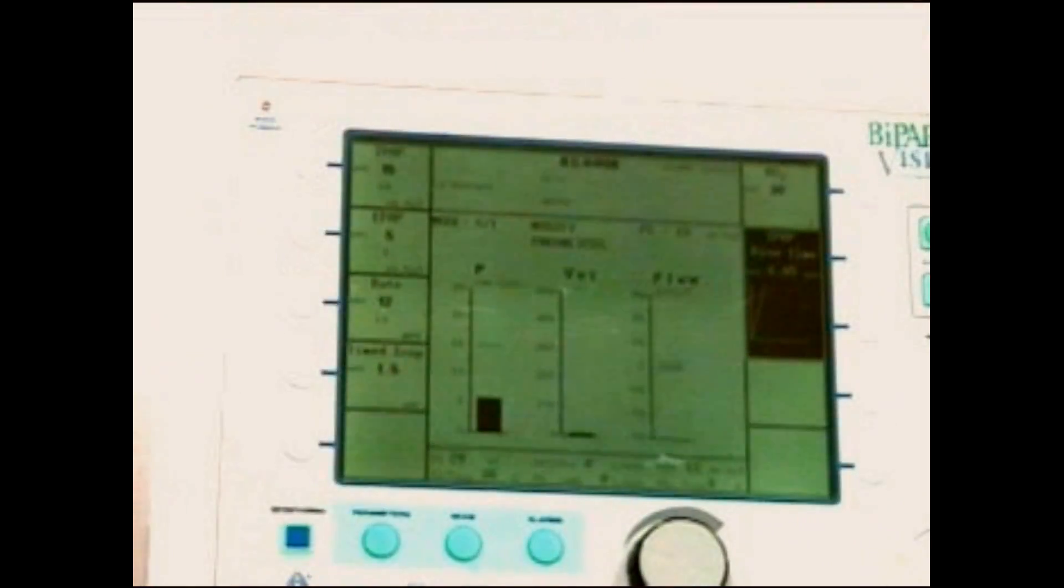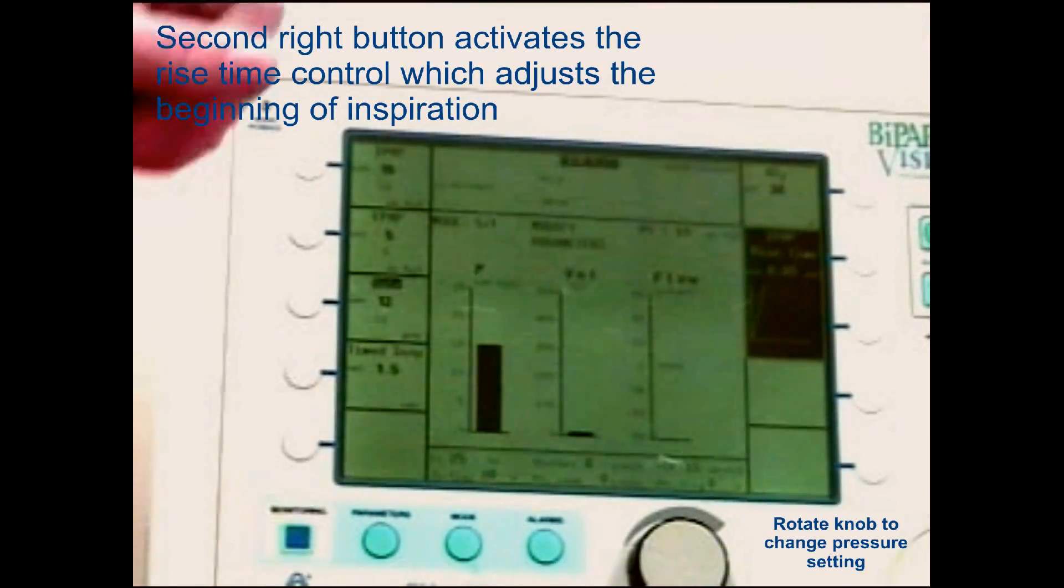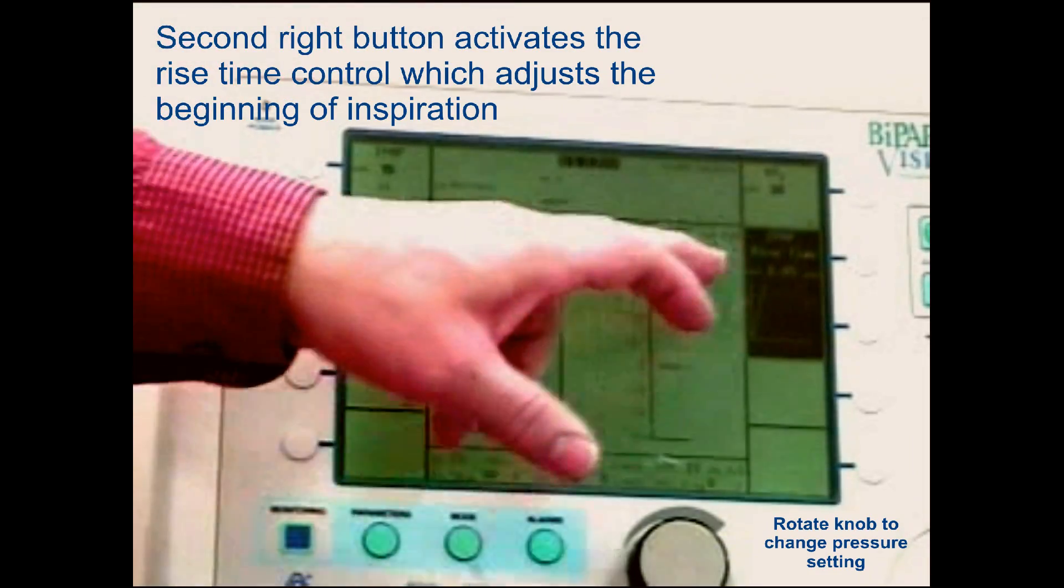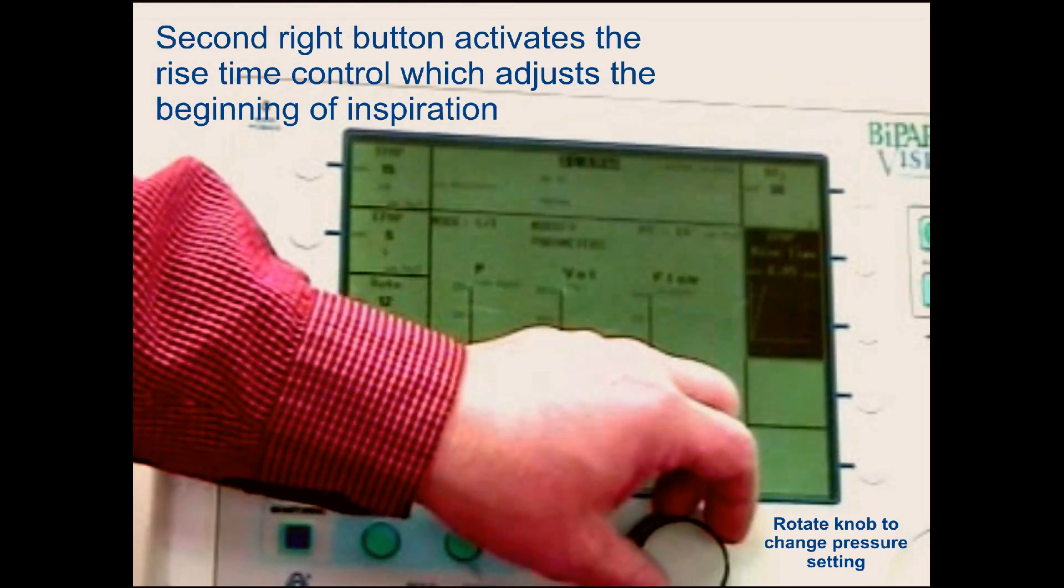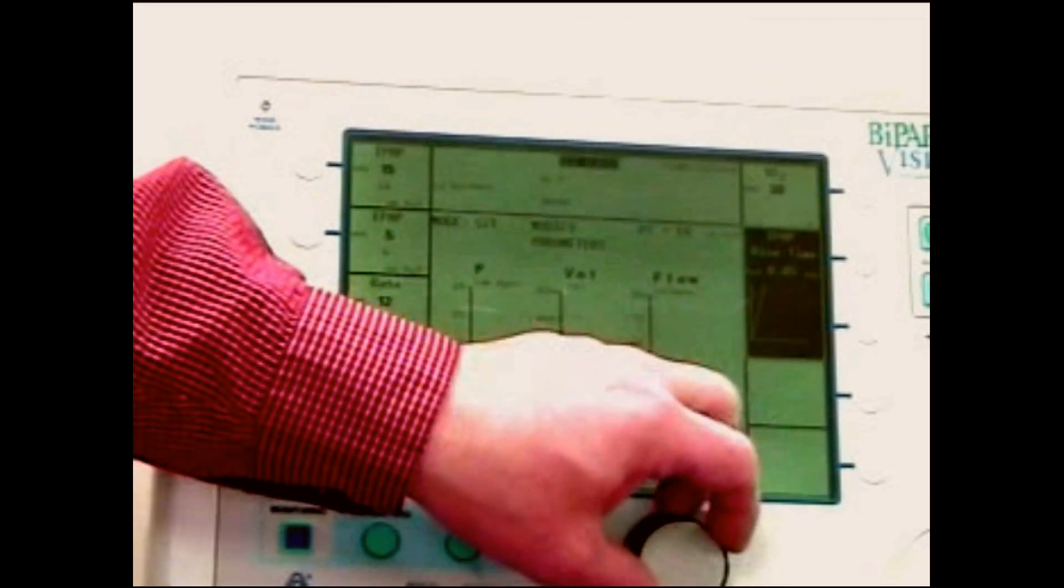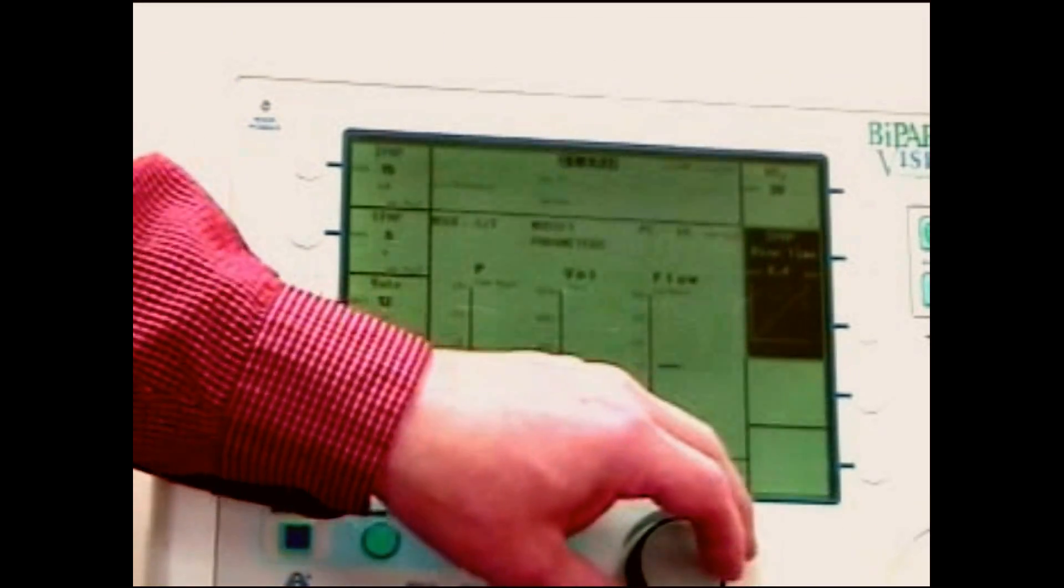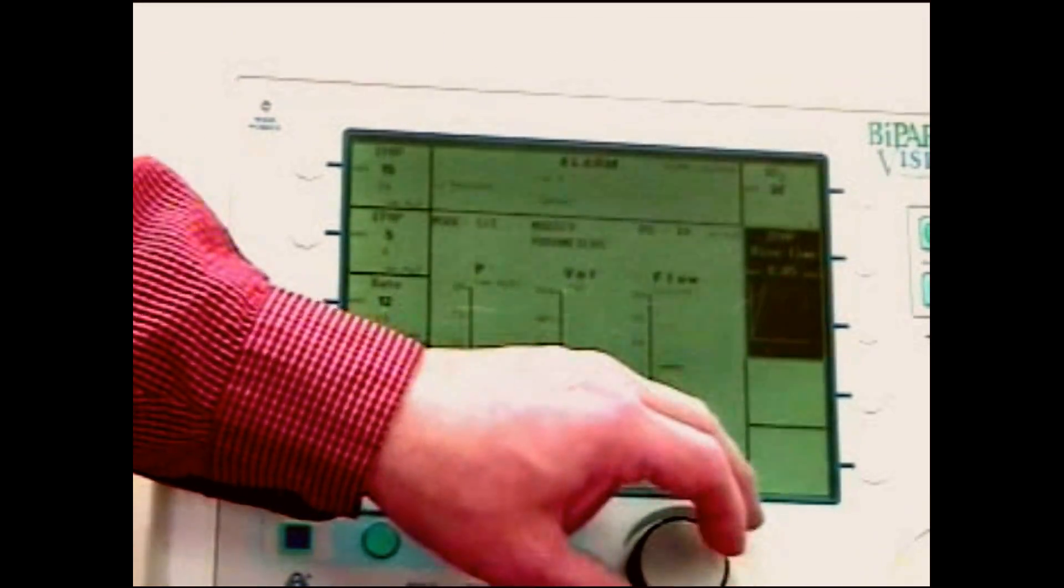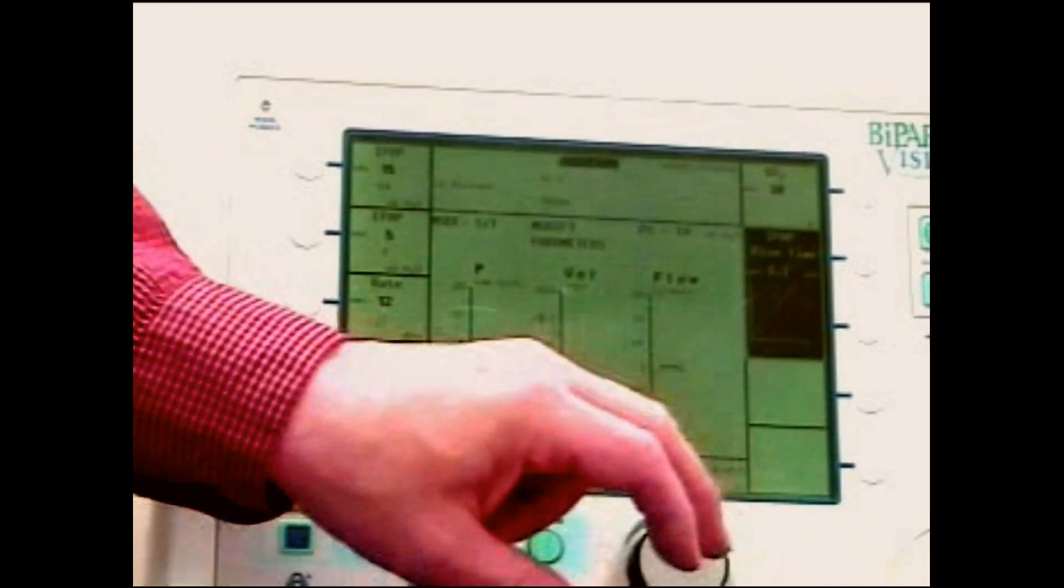And then rise time. Rise time is the speed at which the air initially goes to the patient. If you want it faster, you go .05 or as slow as .4. We'll select for this patient a .2.